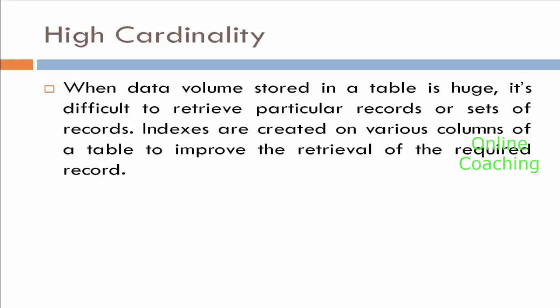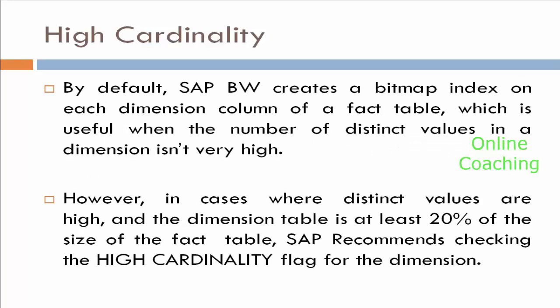Indexes will be created column-wise to improve the retrieval performance in a table. By default, SAP BW creates a bitmap index for each dimension column of the fact table, which is useful when the number of distinct values in the dimension isn't very high. However, in cases where distinct values are high and the dimension table is at least 20% of the size of the fact table, SAP recommends making that dimension table as high cardinality. You need to always monitor — if your fact table is 1 GB and a dimension table crosses 200 MB in size, immediately make it high cardinality.